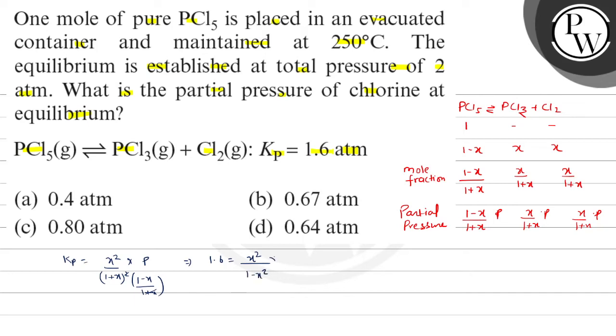So it will be 8 by 10, 0.8 X square upon one minus X square equals to 8 by 10. So 10 X square equals to 8 minus 8 X square, which is 18 X square equals to 8. X square equals to 8 by 18, 4 by 9.